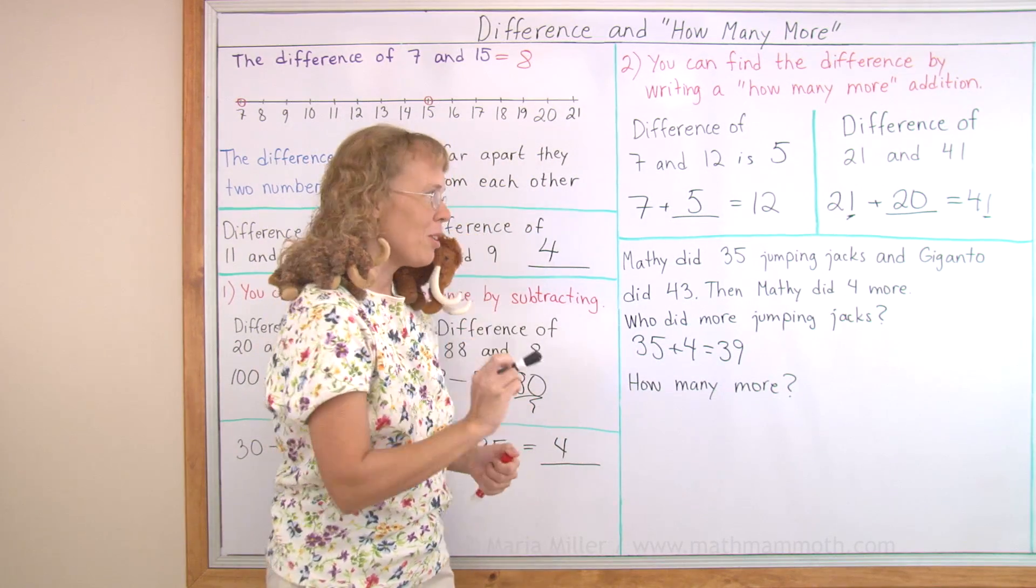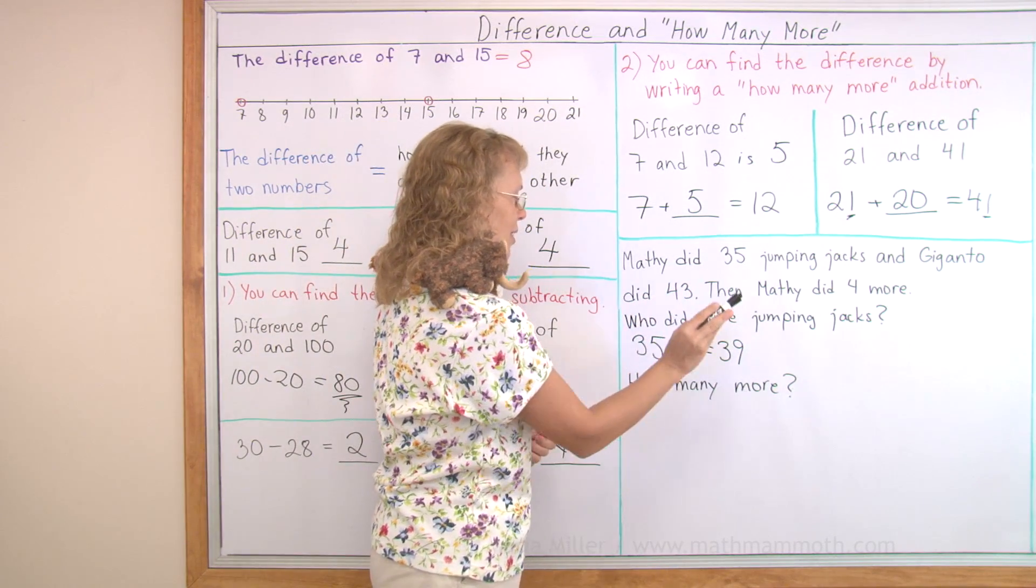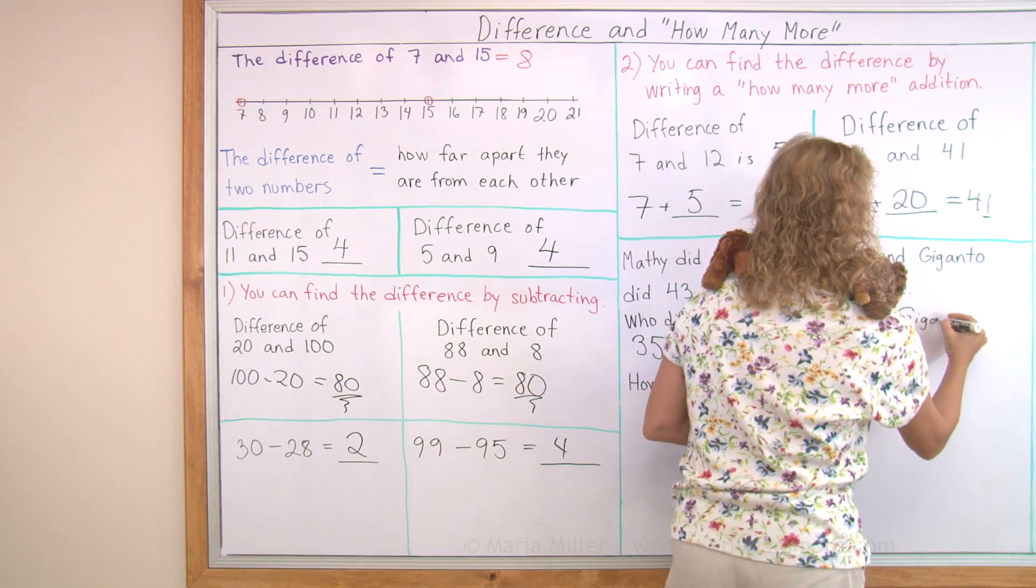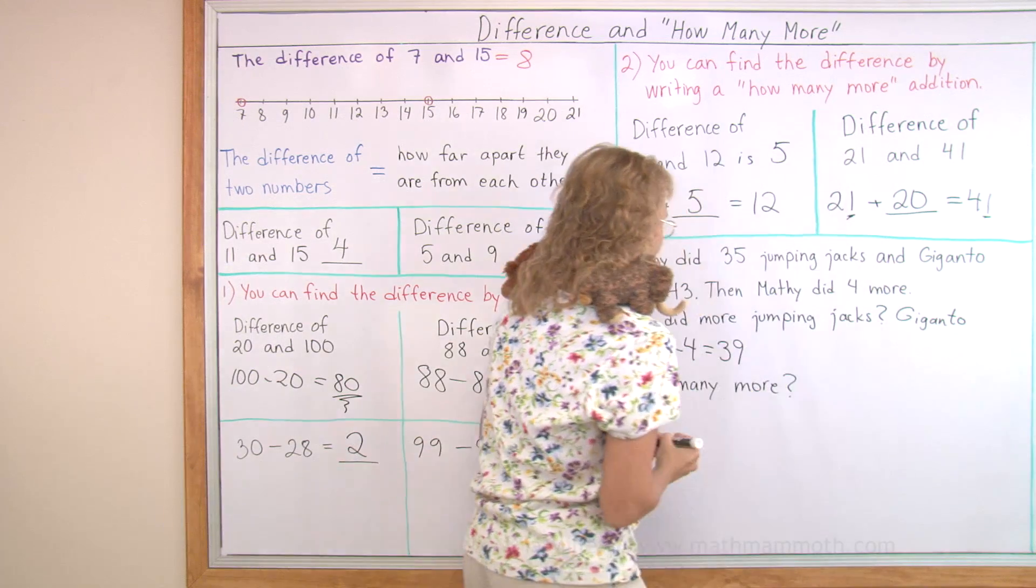Now we can see who did more, because Giganto did 43, Mathie did 39. So Giganto did more.